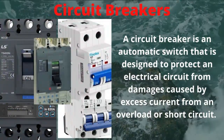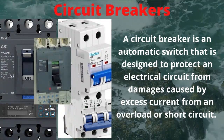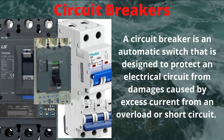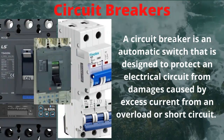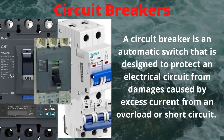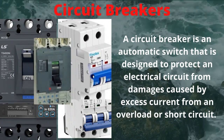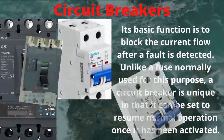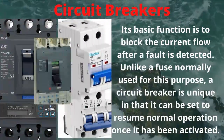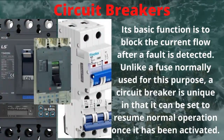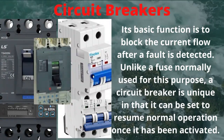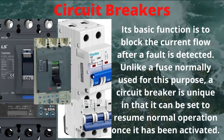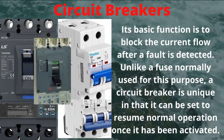A circuit breaker is an automatic switch that is designed to protect an electrical circuit from damage caused by excess current from an overload or short circuit. Its basic function is to block the current flow after a fault is detected. Unlike a fuse normally used for this purpose, a circuit breaker is unique in that it can be reset to resume normal operation once it has been activated.